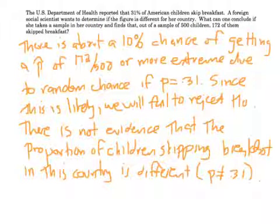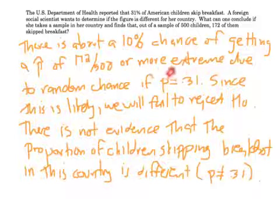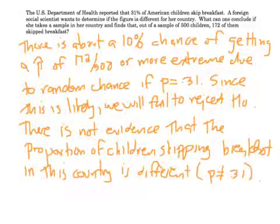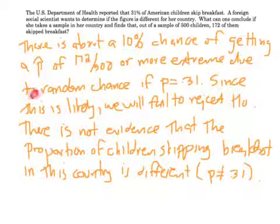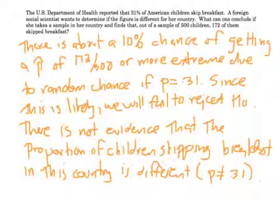Now we just write our last paragraph, which is exactly like what we've been doing with hypothesis tests all along. There is about a 10% chance — that was our P-value, P equals 0.10 — of getting a P-hat of 172 over 500 or more extreme. I wrote it that way because it's not a greater-than problem, not a less-than problem — it's a two-sided, not-equal-to problem. There's about a 10% chance of getting a P-hat of 172 out of 500 or more extreme due to random chance if P is actually 31%. Since this is above 5%, we fail to reject the null hypothesis. There is not evidence that the proportion of children skipping breakfast in this country is different from the United States.